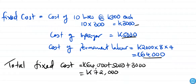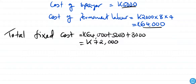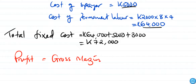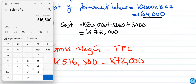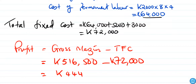Now to find profit: profit equals gross margin minus total fixed cost. Gross margin is 516,500 kwacha minus total fixed cost of 72,000 kwacha. The difference is 444,500 kwacha. So profit equals 444,500 kwacha.